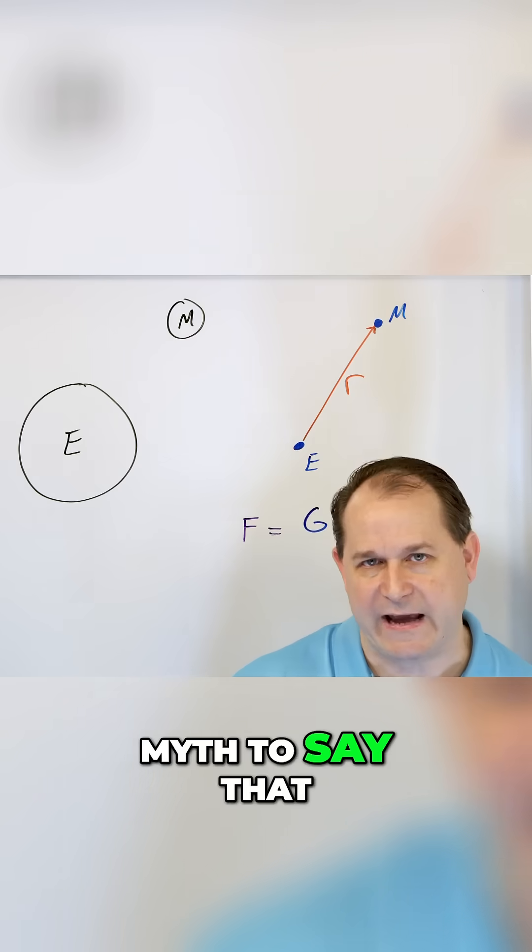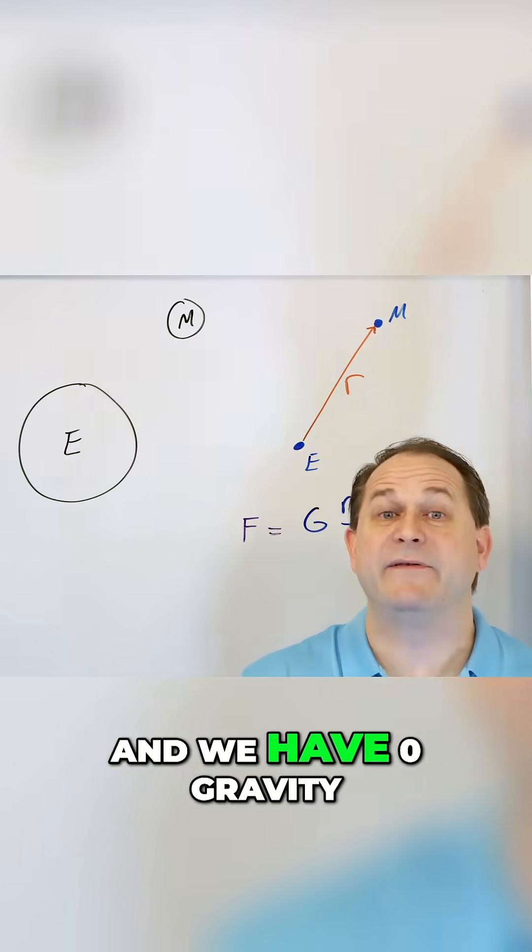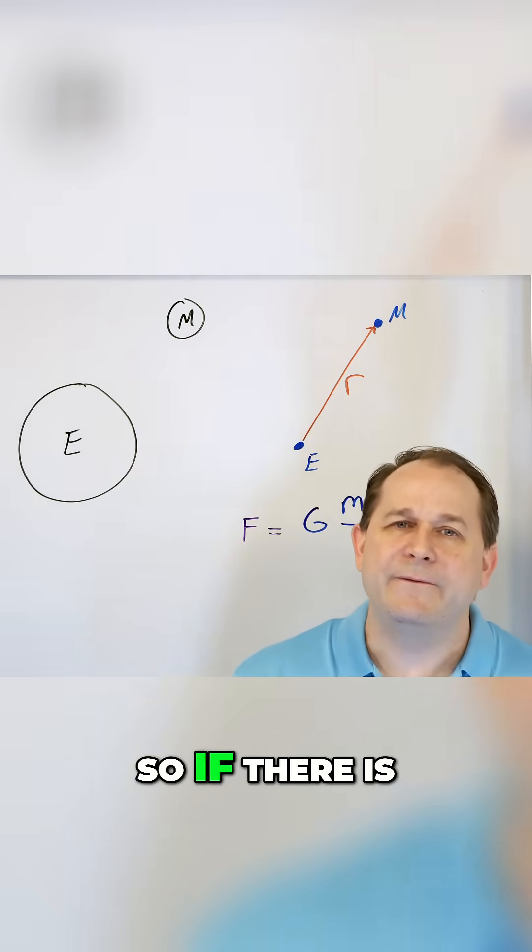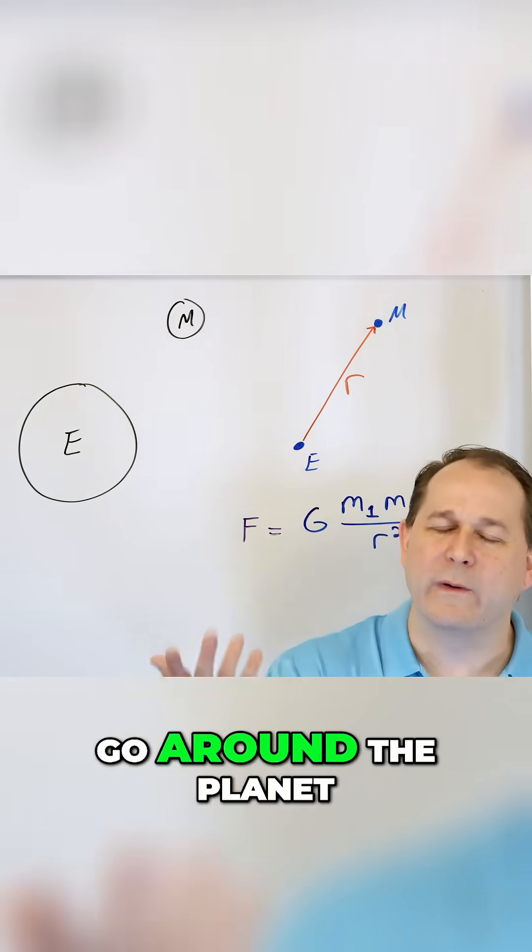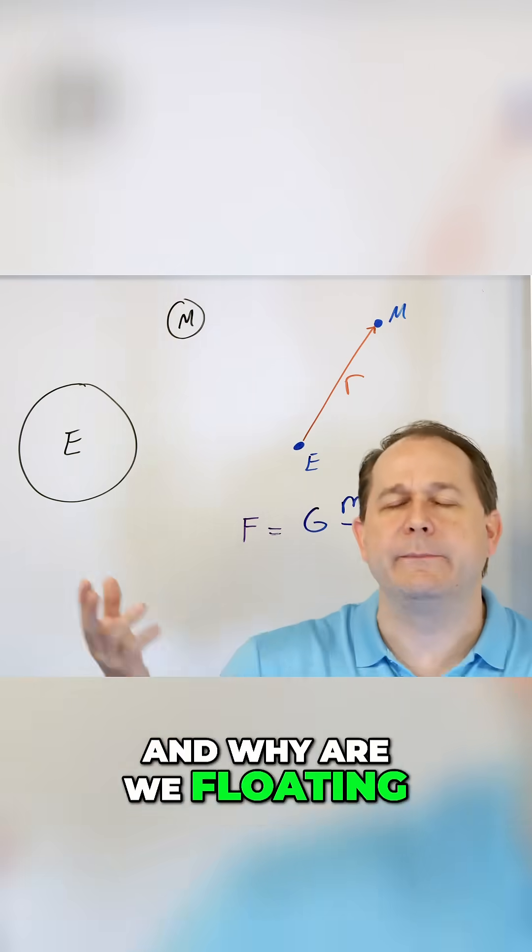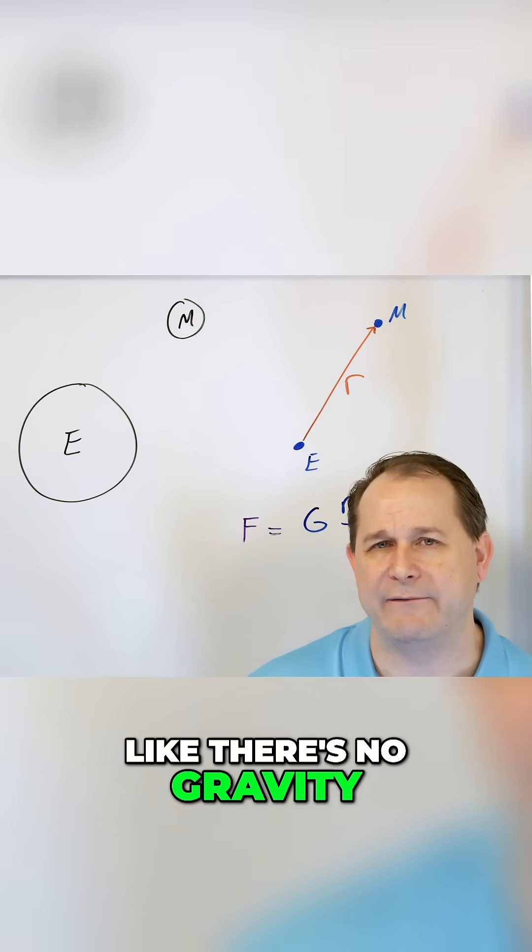So it's a complete myth to say that we go into space and we have zero gravity. So if there is gravity acting on a spacecraft, then how does it go around the planet, and why are we floating? Because it certainly looks like there's no gravity up there.